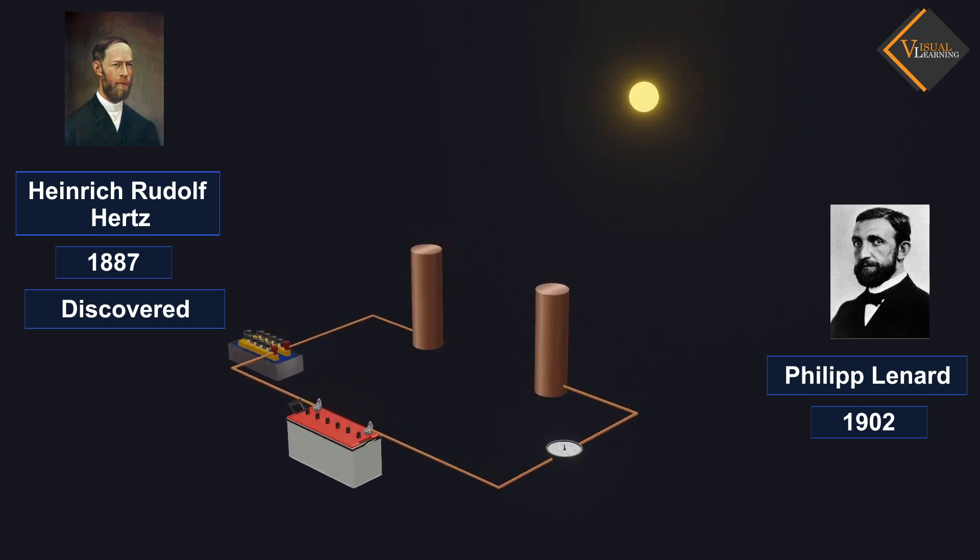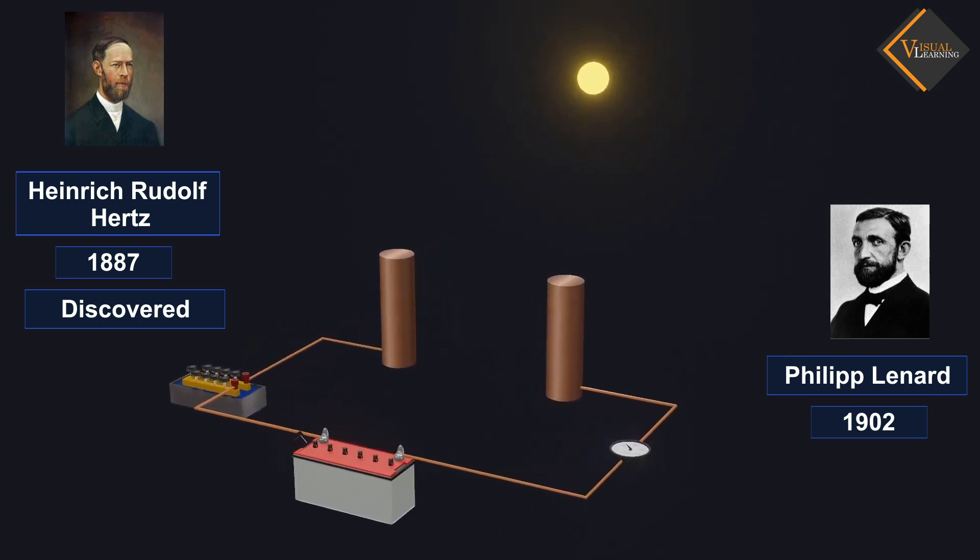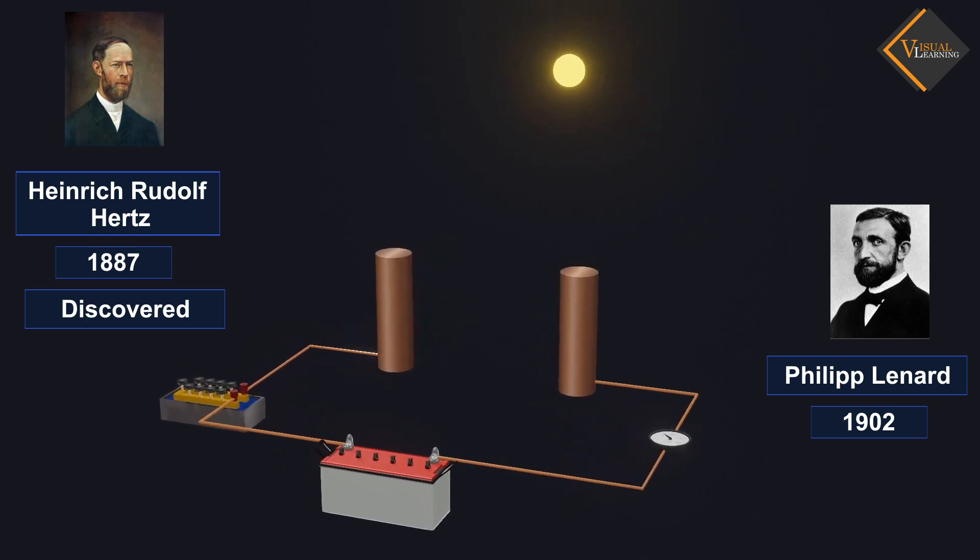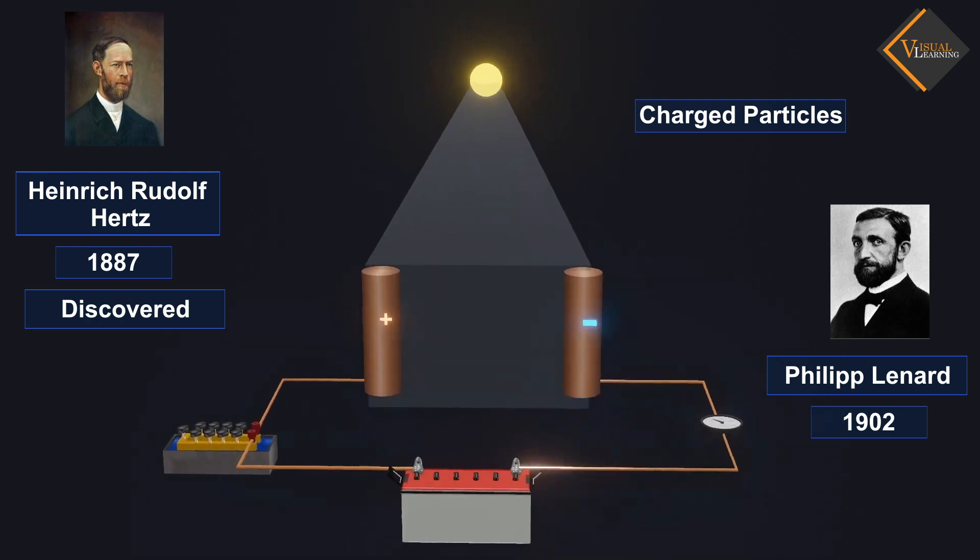In 1902, German physicist Philipp Lenard explained this observation by stating that light falls on the metal surface liberating charged particles from the metal surface.